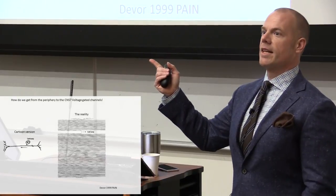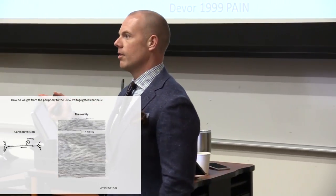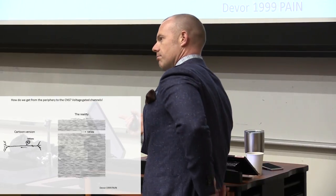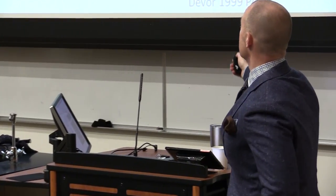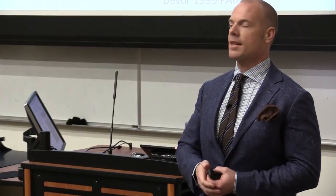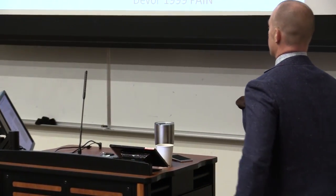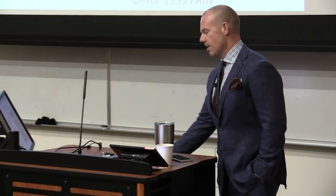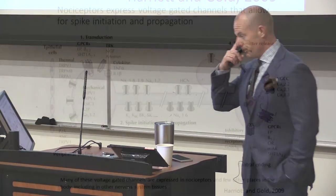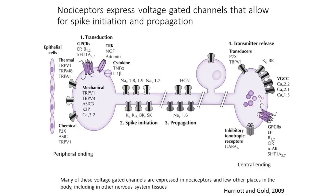For a DRG neuron innervating your leg from the L4 dorsal root ganglion, the axon is close to a meter long. Once it passes the cell body, the central extension must travel up the spinal column to the dorsal horn, where it makes its first synapse. That's a very long distance to conduct an electrical signal using voltage-gated sodium channels.